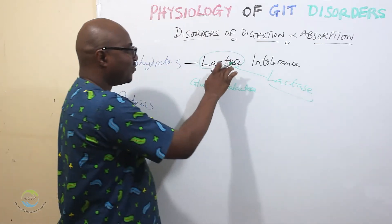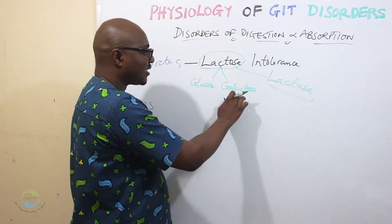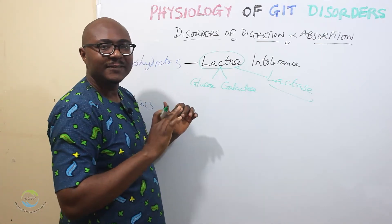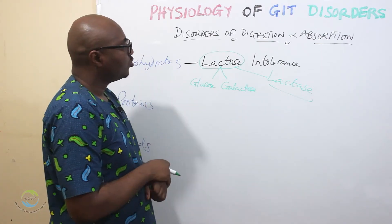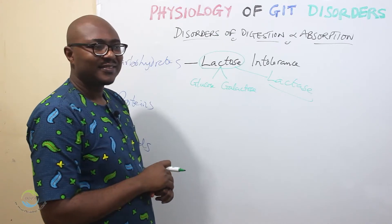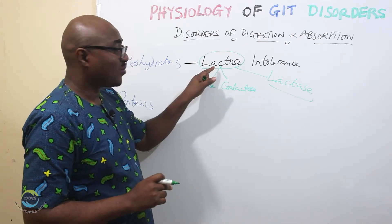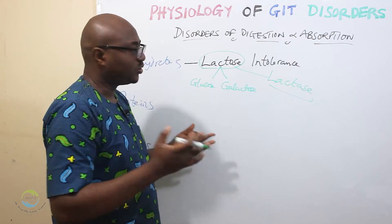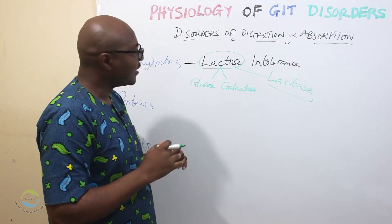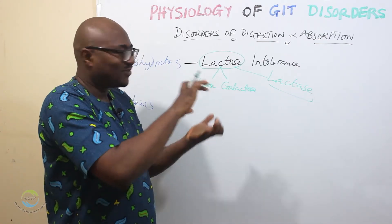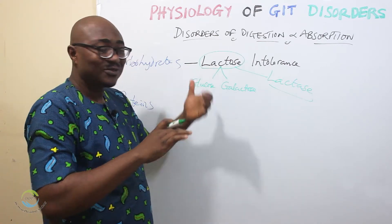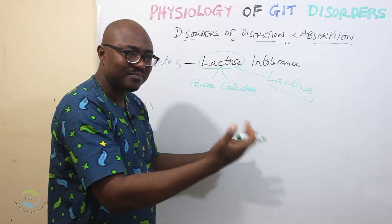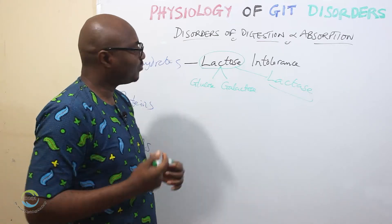Lactase is the one that breaks lactose down into glucose and galactose, which can then be absorbed as monosaccharides. Lactose is known as milk sugar, and it is found commonly in milk and other dairy products.